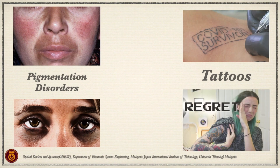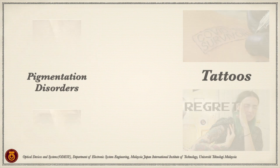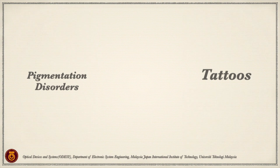A tattoo is a permanent body modification which uses ink, dye and pigment to make a design into the dermis layer of the skin, changing the skin pigment to their desires. People may regret their tattoos and wish to have them removed.